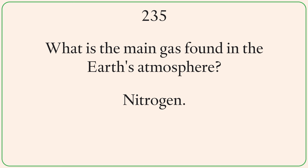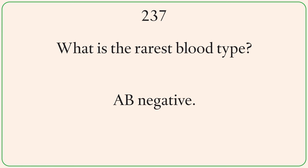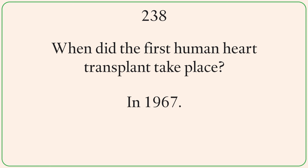What is the main gas found in the Earth's atmosphere? Nitrogen. What is the smallest unit of life? A cell. What is the rarest blood type? AB negative. When did the first human heart transplant take place? In 1967.